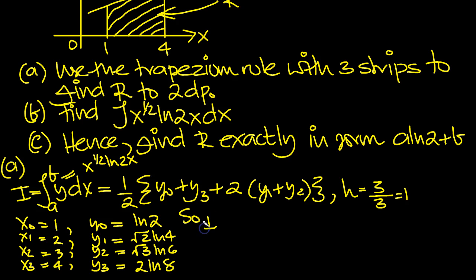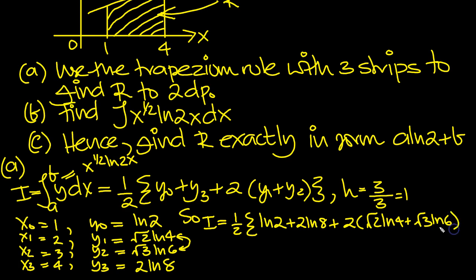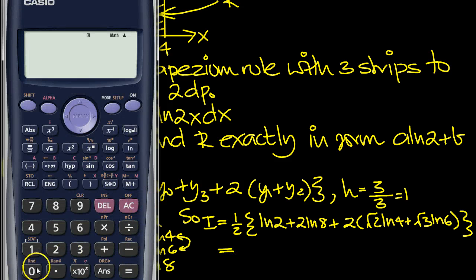So I equals then half. The first and the last, ln 2 plus 2 ln 8, plus 2 times these two in the middle, root 2 ln 4 plus root 3 ln 6, close brackets. And we need to tap that in the calculator.